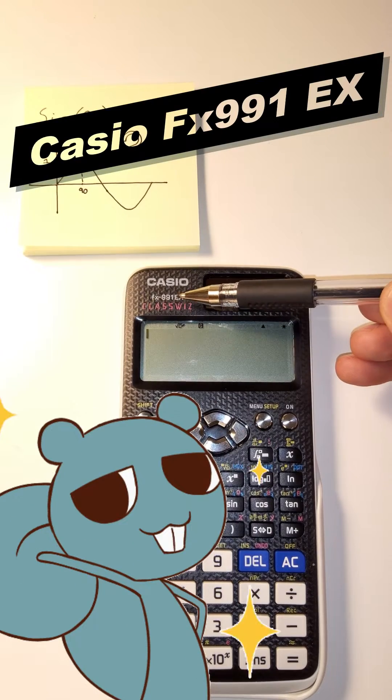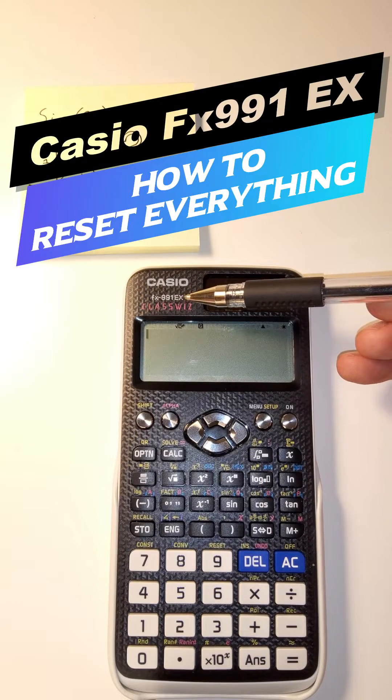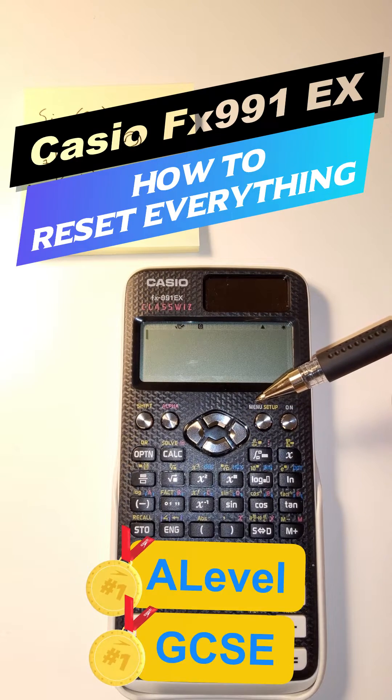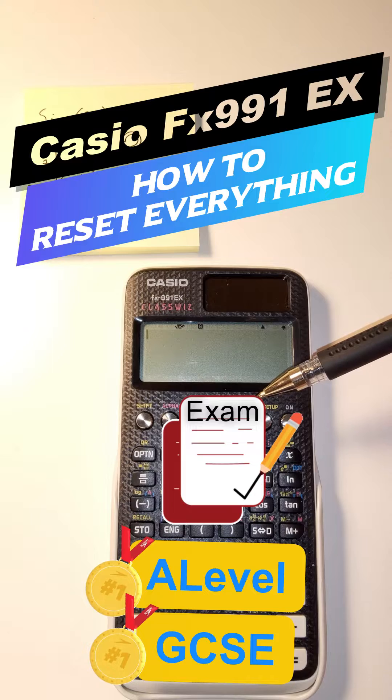Okay, here we're looking at the Casio FX991EX calculator. In my opinion, it's the best one for A-level and GCSE and a number of other things. It's allowed in the exam.